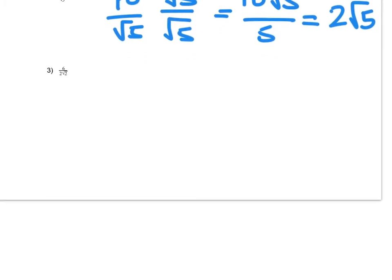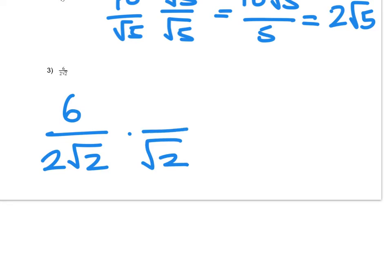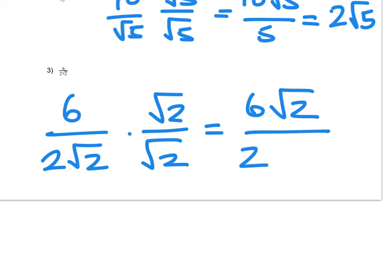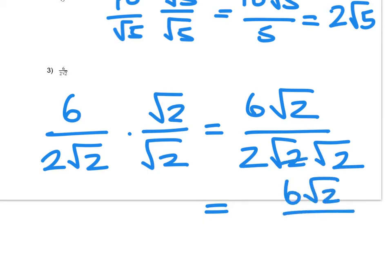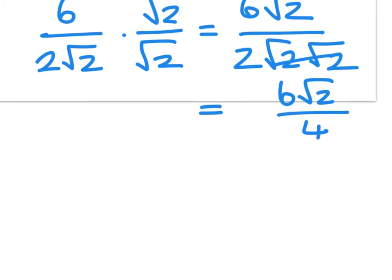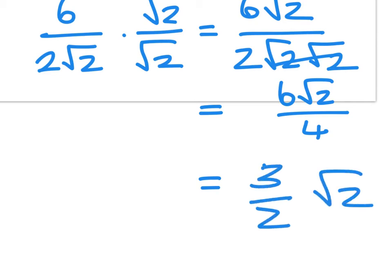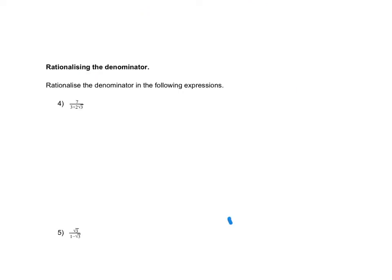This last case here: we have 6 over 2 root 2. I can multiply the bottom by root 2 and the top by root 2 — top and bottom by the same thing. So I get 6 root 2 over 2 root 2 times root 2, which equals 6 root 2 over 4. The 6 and the 4 simplify to give 3 over 2 root 2. Very simple.